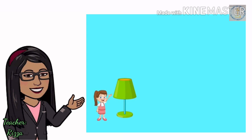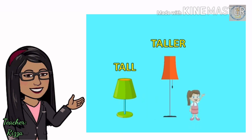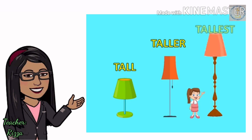This is a lump. This lump is tall. This is the second lump. This lump is taller than the first lump. And this is the third lump. This lump is the tallest among the three lumps.